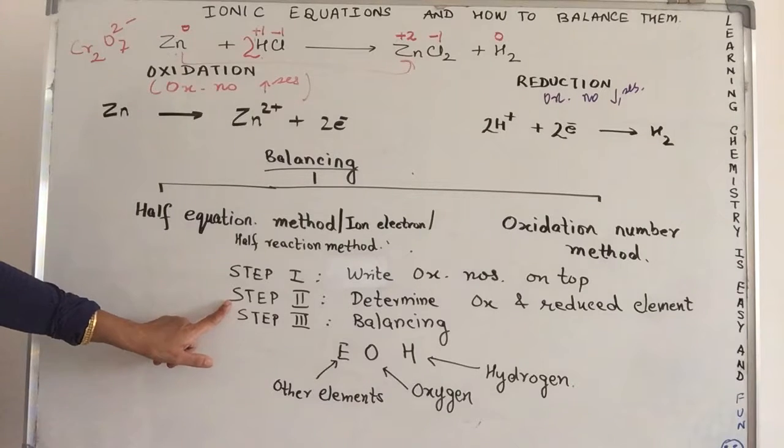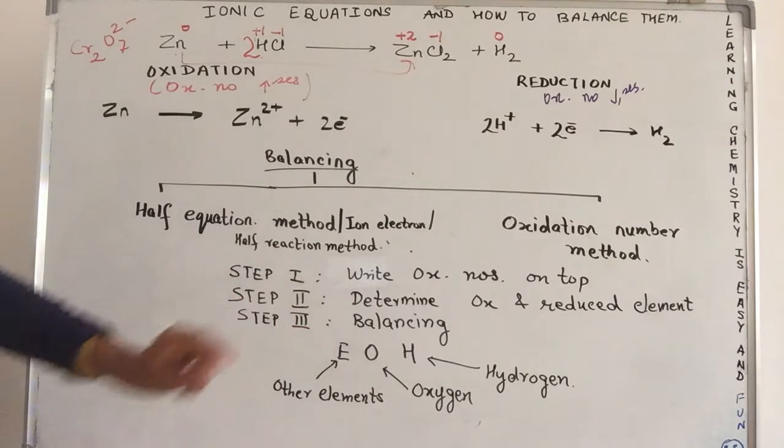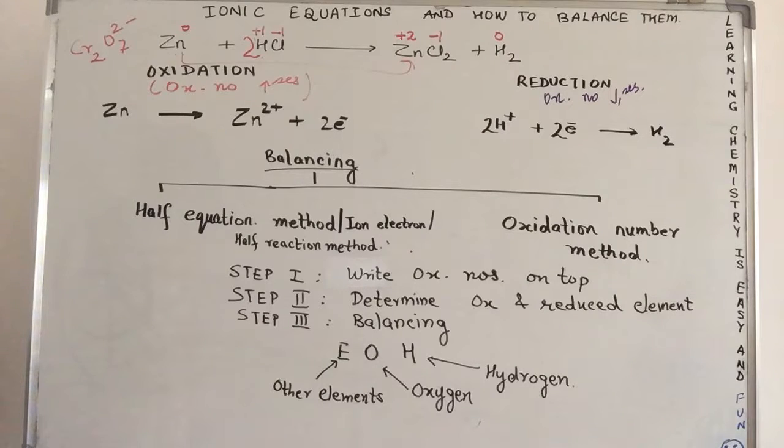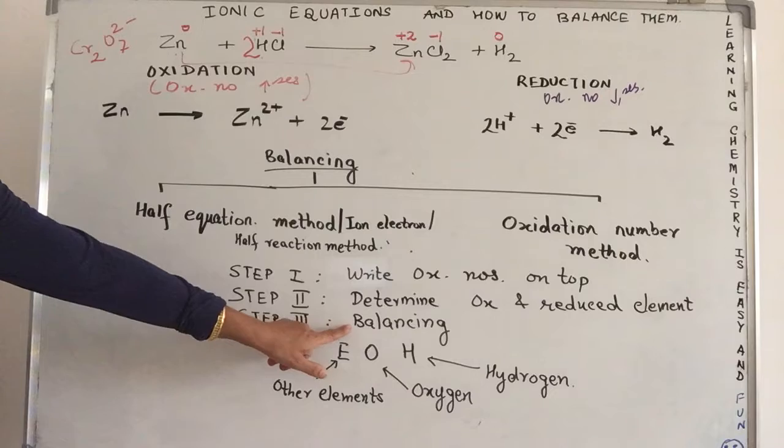Step 2. Determine the oxidized and the reduced element. That also we've done. Zinc is getting oxidized. Hydrogen is getting reduced. Step 3 is to balance.